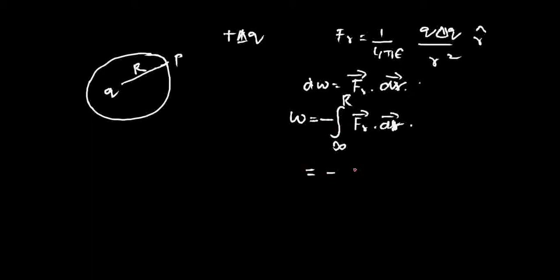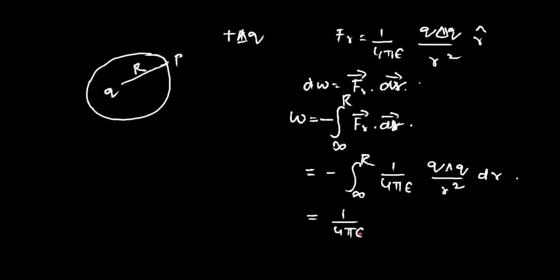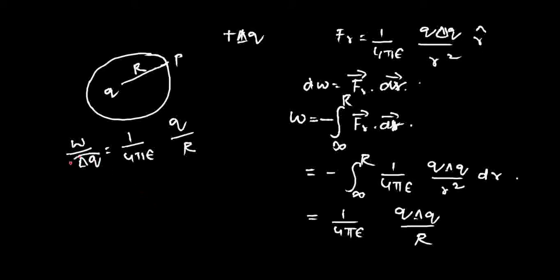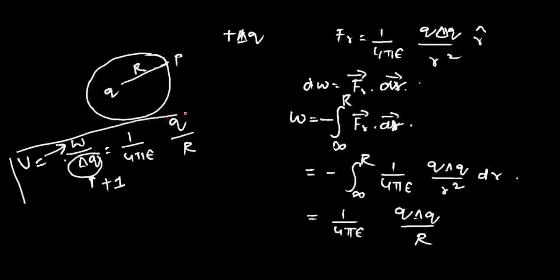The minus sign is because this is work done against the force — there is a repulsive force between these charges and work is done against it. So: W = -∫(infinity to R) (1/4πε)(q·δq/r²) dr. Integrating gives (1/4πε)(q·δq/R). Taking delta q to the other side: W/δq = (1/4πε)(q/R). If you put delta q as a unit positive charge, this work done is referred to as electric potential V.